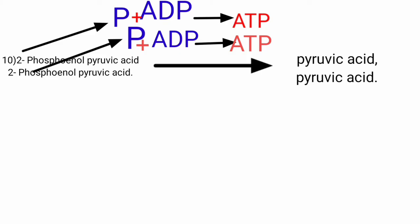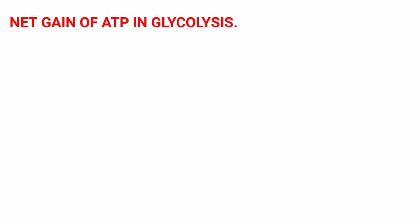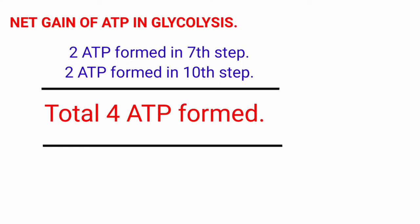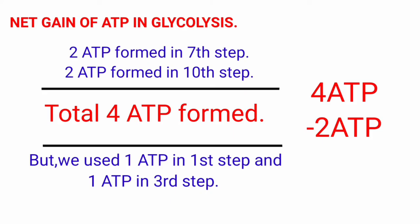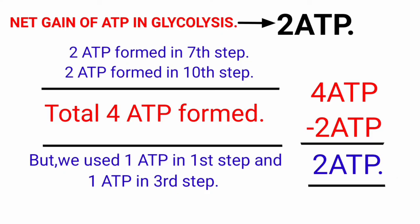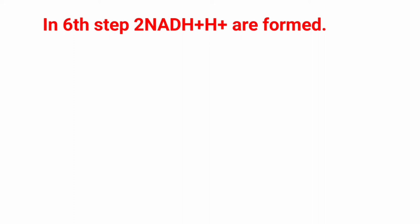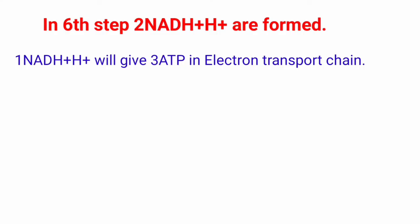So, from one glucose molecule, 2 pyruvic acid molecules are formed. Regarding ATP produced: in step 7, 2 ATP are formed, and in step 10, 2 ATP are formed — total 4 ATP. But step 1 uses 1 ATP and step 3 uses 1 ATP, so 4 ATP minus 2 ATP gives a net gain of only 2 ATP. Also, in step 6, 2 NADH + H+ are formed.